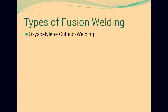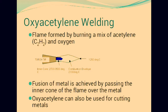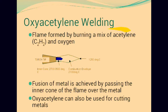Oxyacetylene welding uses a flame formed by burning acetylene and oxygen. In this welding, we are using acetylene and oxygen for burning, and it comes out over the metal. This process can also be used for cutting metals.